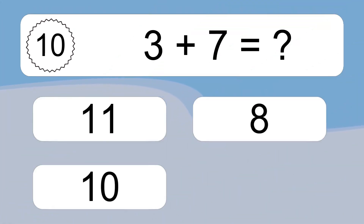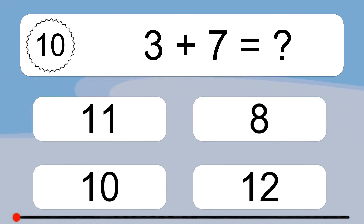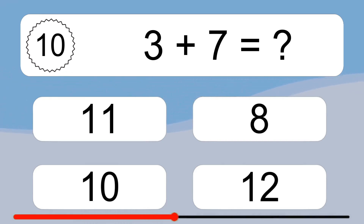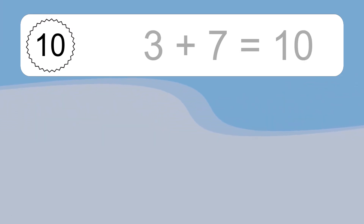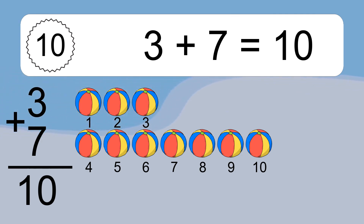Eight plus seven equals what? Eight plus seven equals ten. Let's count it: one, two, three, four, five, six, seven, eight, nine, ten.